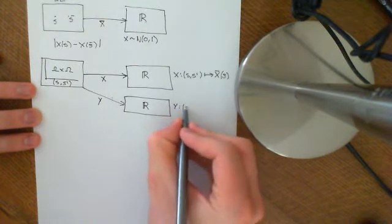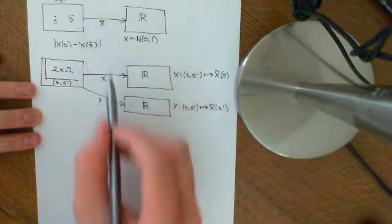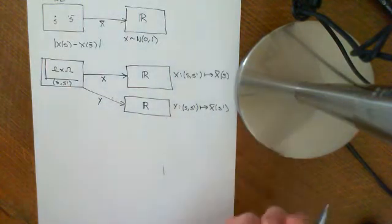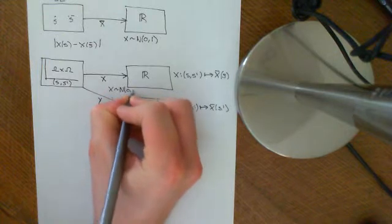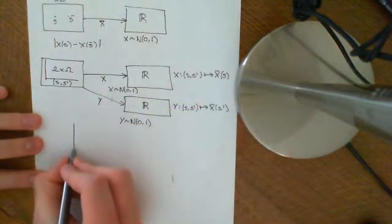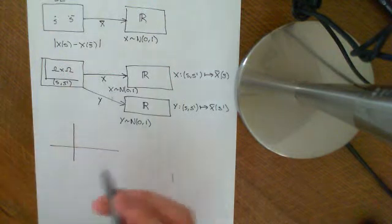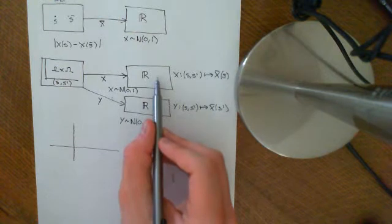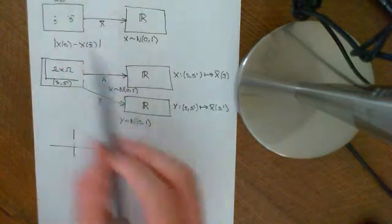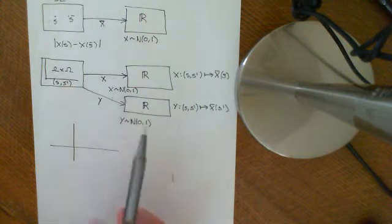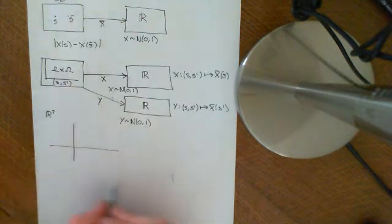Similarly, Y takes an ordered pair (s, s-prime) and maps it onto X-bar of s-prime — whatever the original function would have mapped s-prime onto. Both X and Y are going to be standard normally distributed. When we plot them as a joint random variable, we have a plane where X takes values on one axis and Y on the other. For any fixed s, you get a value of X, and varying the second entry over all of omega gives every possible real number for Y. So this corresponds to R², where every pair of numbers is a possibility.